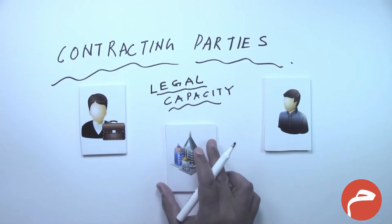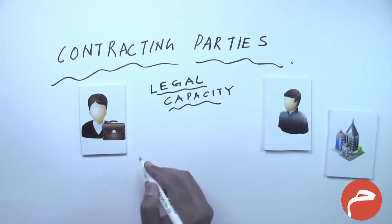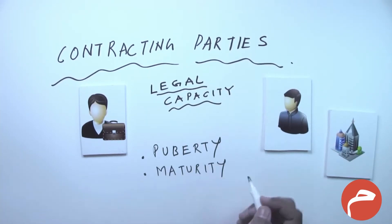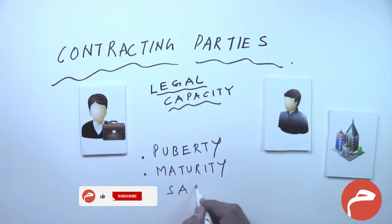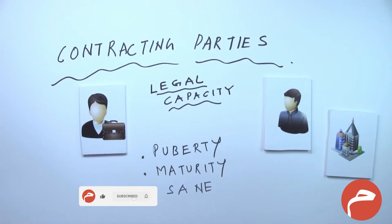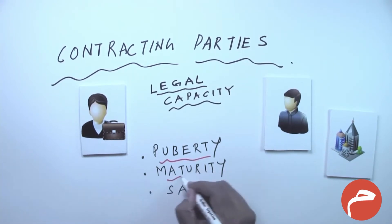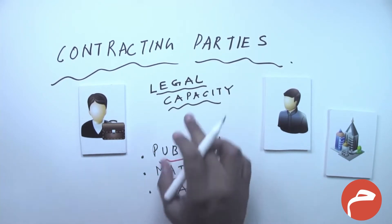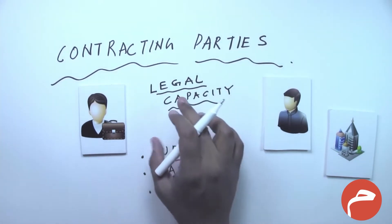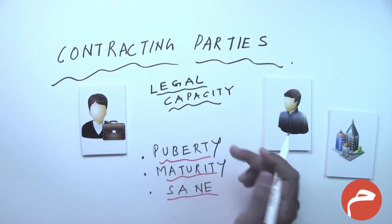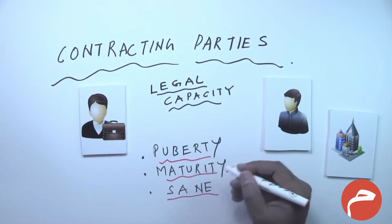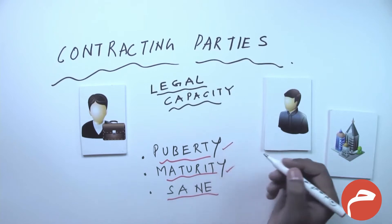What do we mean by legal capacity? These parties must attain three things: one is puberty, the other is maturity, and they both must be sane. These are three important points generally considered when we say that the parties should have legal capacity to enter into a contract.